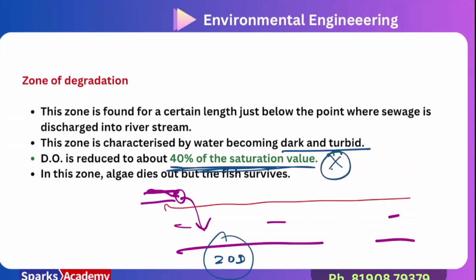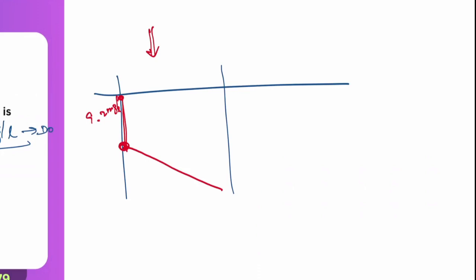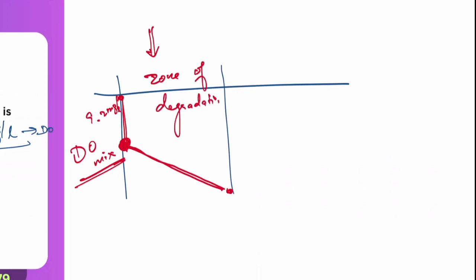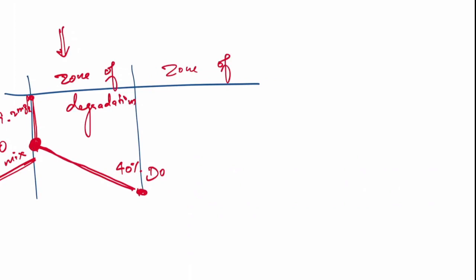Super important question: the initial DO of a flowing river is 9.2 mg/L. Once a sewage discharge occurs, there is a sudden drop in DO. The re-oxygenation curve illustrates this. The zone of degradation: this zone is found just below the point where sewage is discharging to the river stream. This zone is characterized by water becoming dark and turbid, and DO is reduced to about 40% of the saturation level.